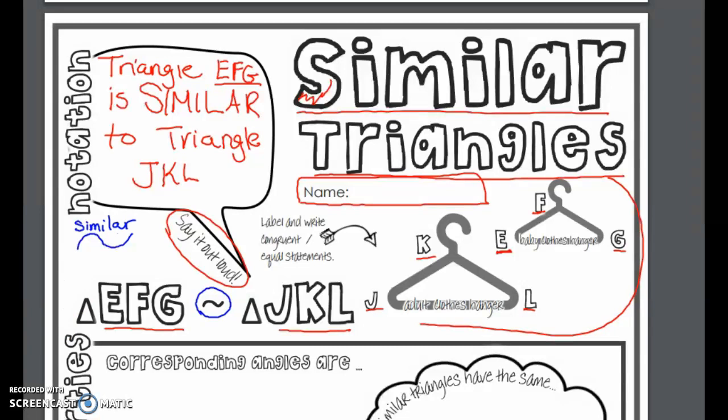Now, when we use this symbol, we talk about triangles. We actually use the triangle symbol. We draw a triangle. We say triangle EFG is similar to triangle J, K, L. So that's how I say these symbols. So this is how we say it out loud. This is how we write it.